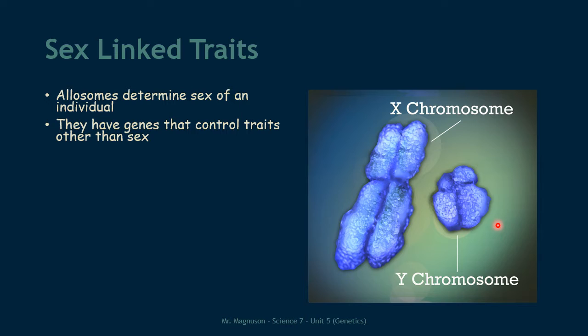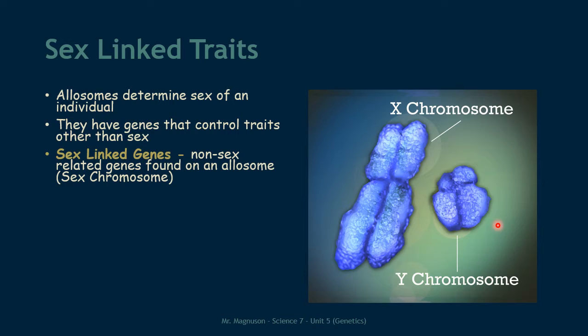Any gene that is on an allosome — an X or Y chromosome — that doesn't control sex is called a sex-linked gene, because it is connected to being male or female but does not necessarily determine sex. So just because these genes are on the same chromosome, they are related to sex, even though many of them might not have anything to do with sex, like how your blood clots or how your eyes distinguish between colors.